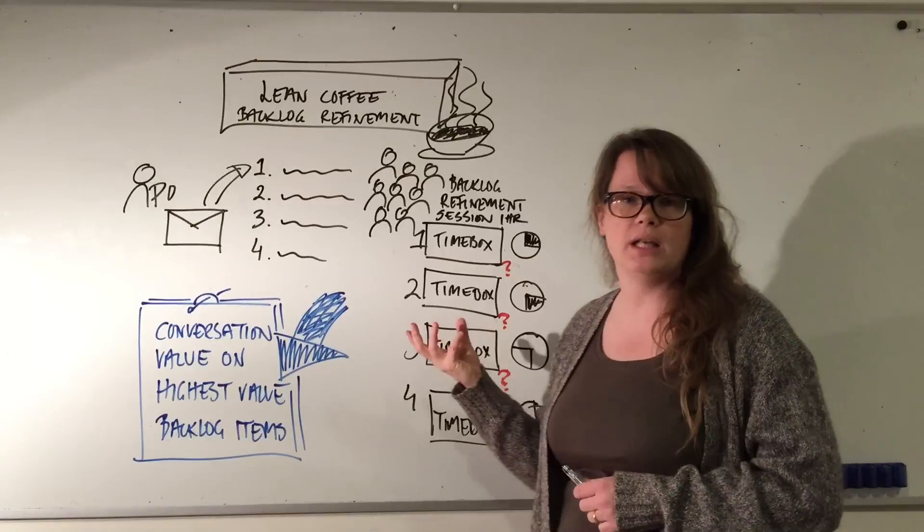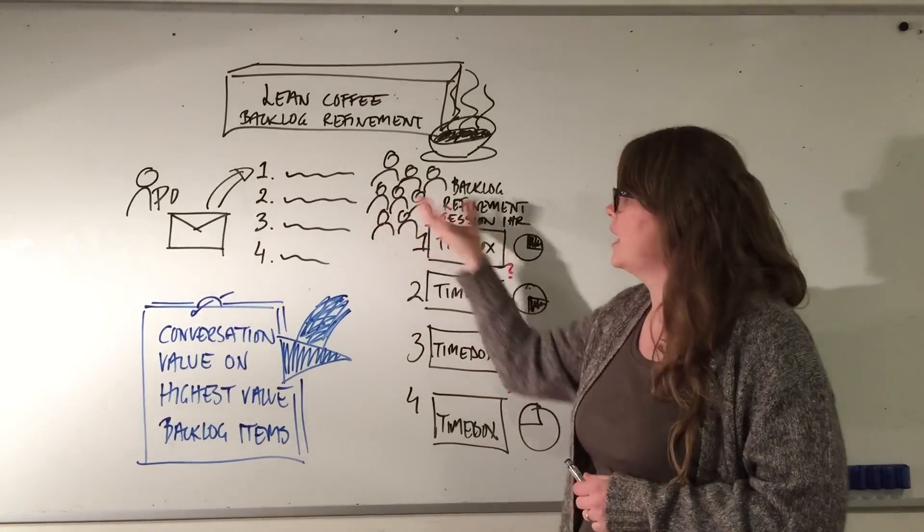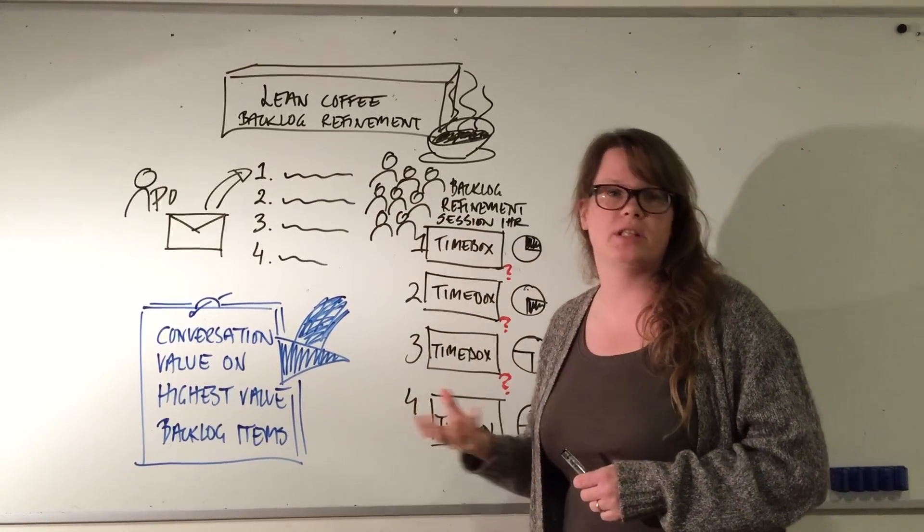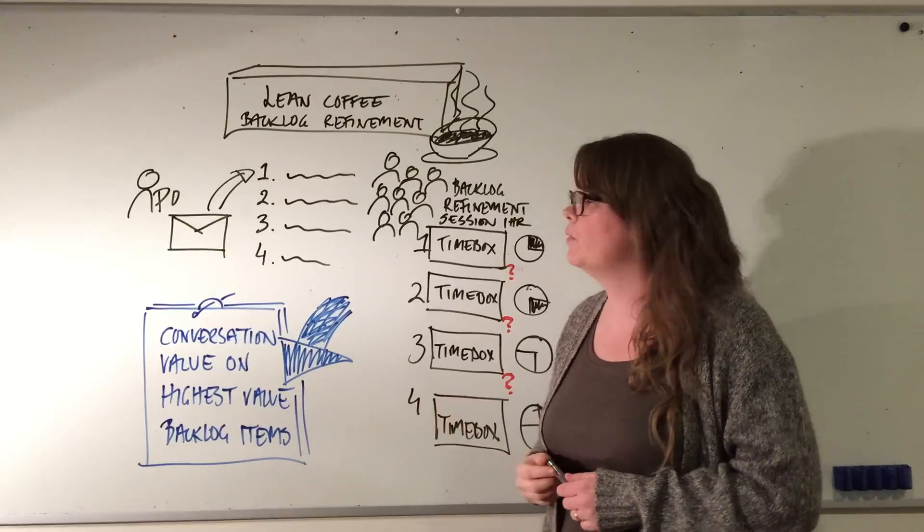The first time box is 15 minutes. We pull the first item into the time box and refine it from whatever state the backlog item is in.